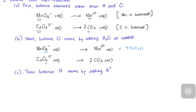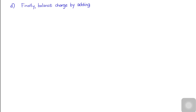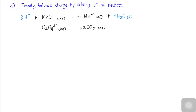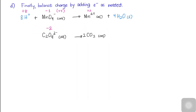Going back to the permanganate half-reaction, the eight hydrogen atoms now on the product side from the water molecules we added must be balanced by adding eight hydrogen ions to the reactant side. There are now equal numbers of each type of atom on both sides, but the charge still needs to be balanced. For the permanganate half-reaction, the charge of the reactants is 8+ plus negative 1, which equals 7+, and that of the products is positive 2. For the oxalate half-reaction, we have negative 2 for the reactant side and zero on the products. To balance this, we add five electrons to the reactant side of the permanganate half-reaction, and two electrons to the products of the oxalate half-reaction.